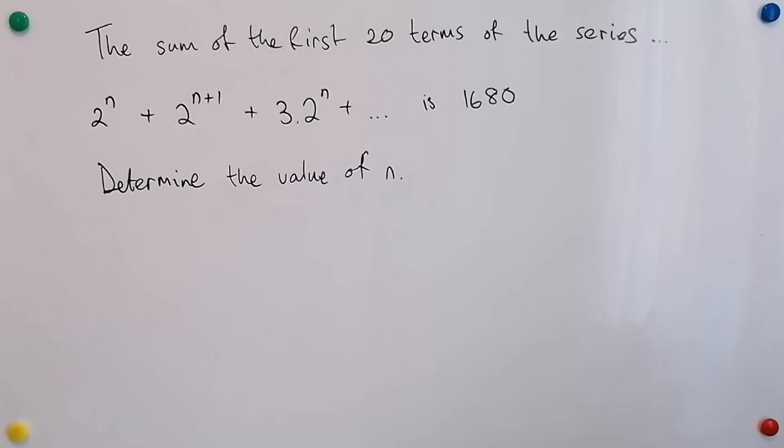Let's read the question and figure out how to answer this one. The sum of the first 20 terms of the series 2 to the power of n plus 2 to the power of n plus 1 plus 3 times 2 to the power of n plus dot dot dot is equal to 1680. Determine the value of n.